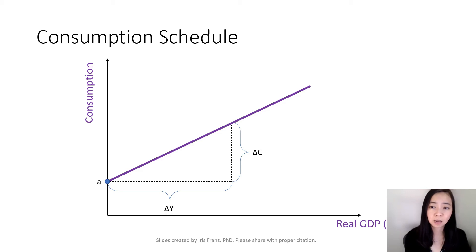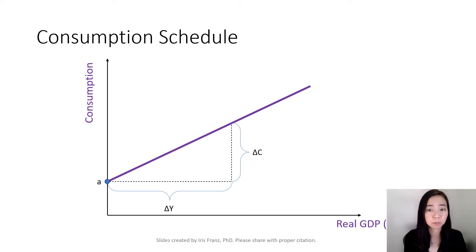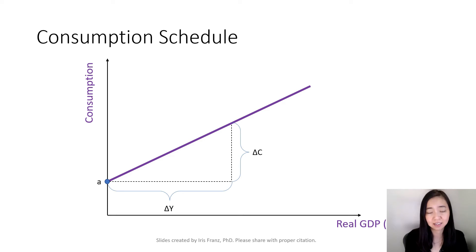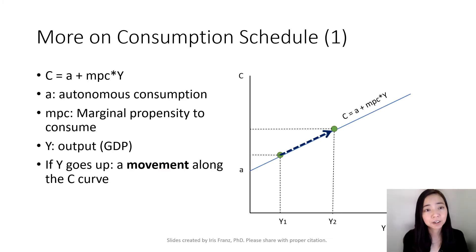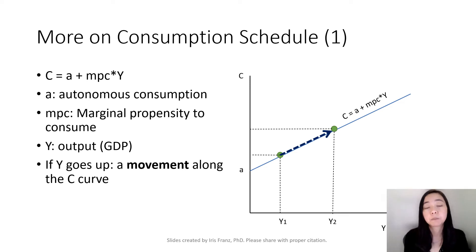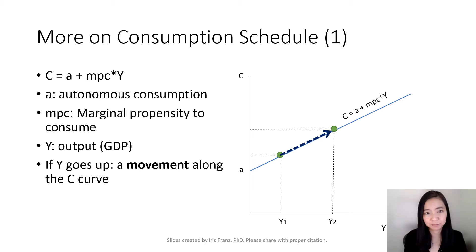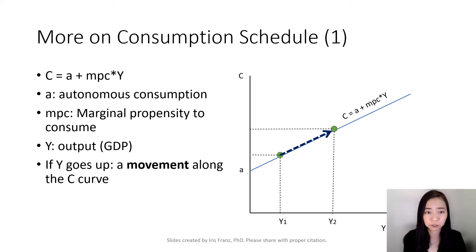Here is our consumption schedule. You can see the positive relationship between consumption and real GDP, and the slope of the consumption schedule is exactly equal to MPC. So here, consumption is equal to autonomous consumption plus MPC times Y, and Y is our real GDP. If Y goes up, you are going to see a movement along the consumption schedule.